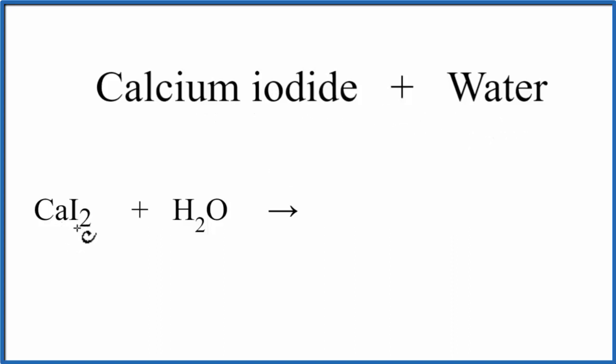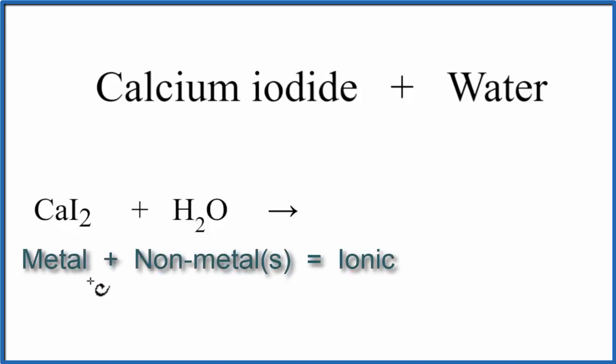Calcium is a metal, and then iodine, that's a non-metal. So when we have a metal and a non-metal, we have an ionic compound, and we need to think about ions.